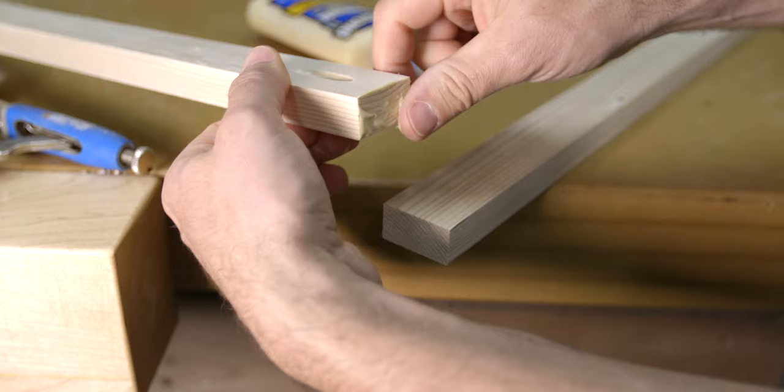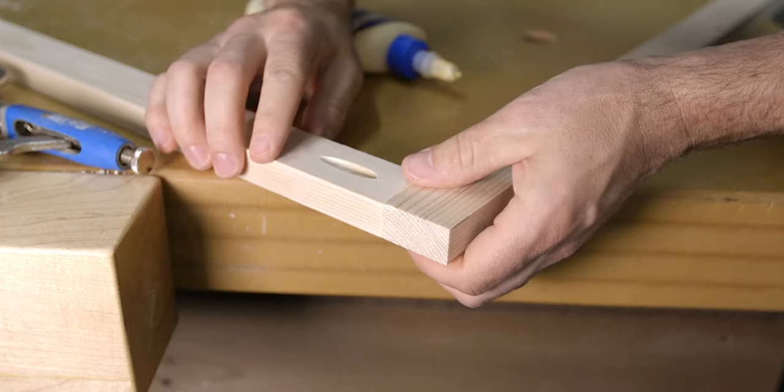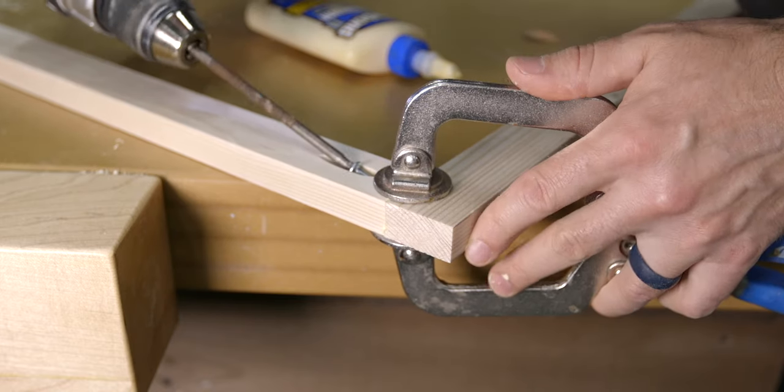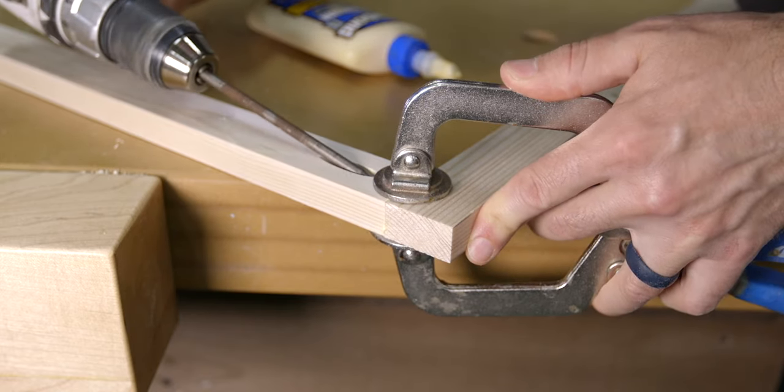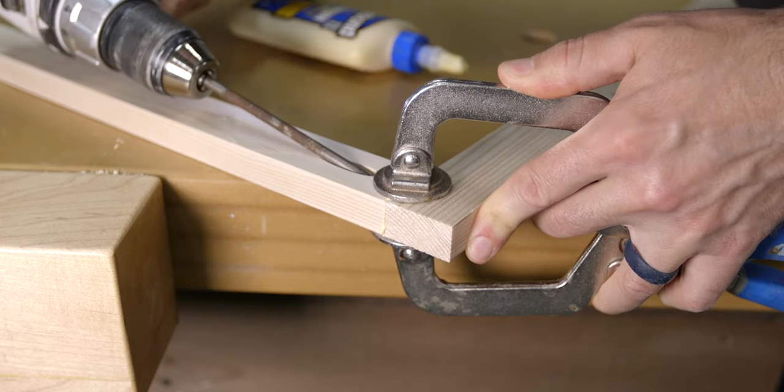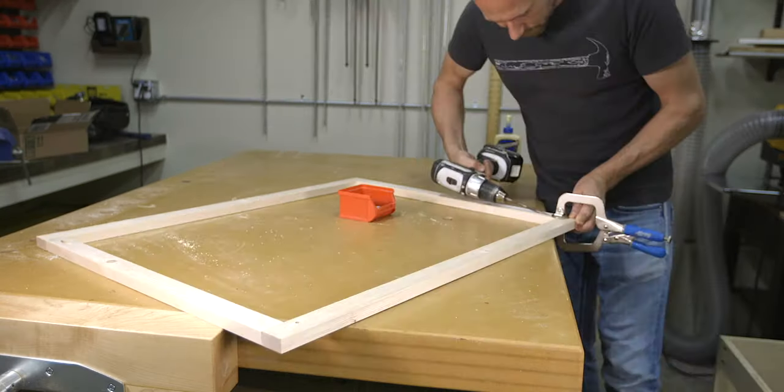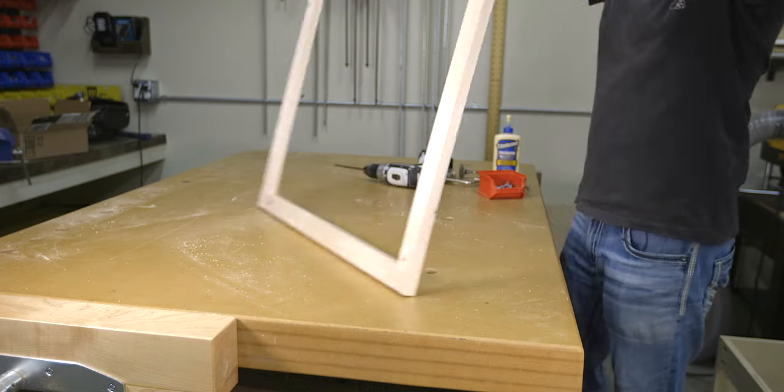To assemble, add glue to the end grain of one rail and line it up with the style. Using the clamp, hold it into position while installing your first screw. The screws I'm using here are an inch and a quarter Craig screws. As you continue to assemble the frame, make sure not to over tighten the screws. Use caution while driving them, and if you want it's a great opportunity to use the clutch on your drill.